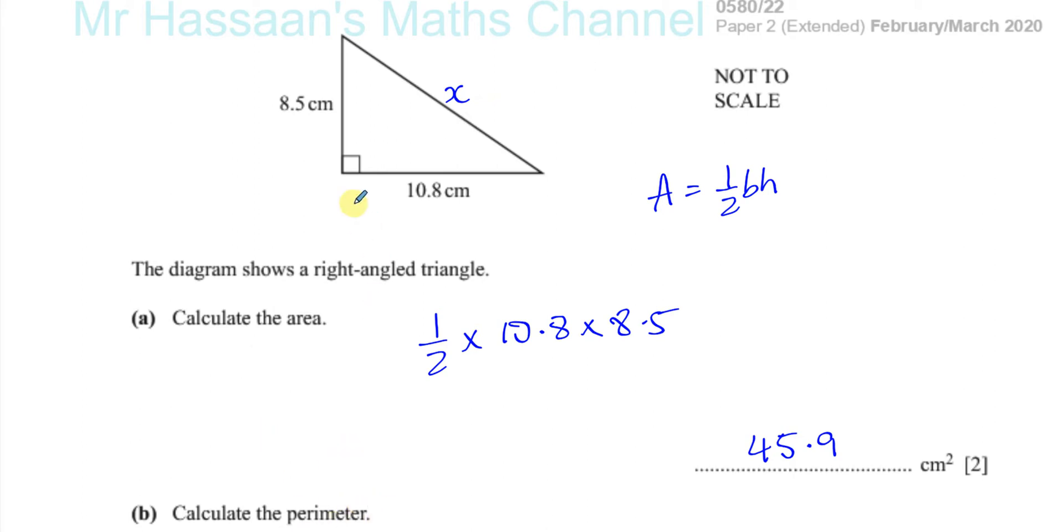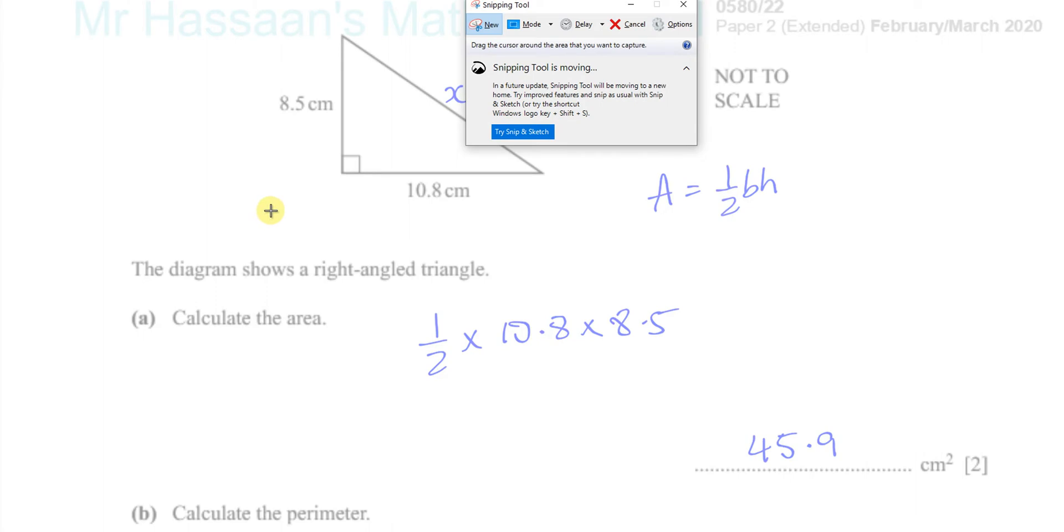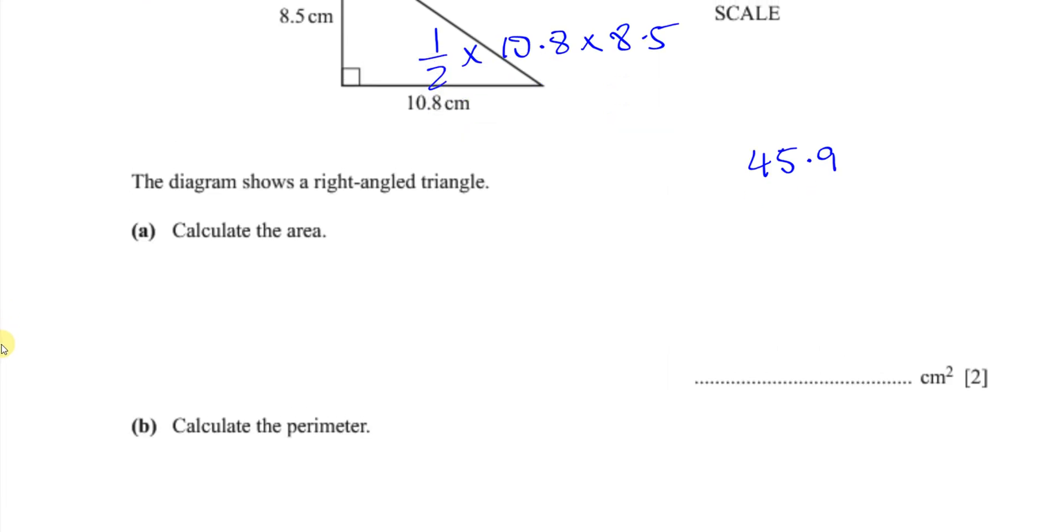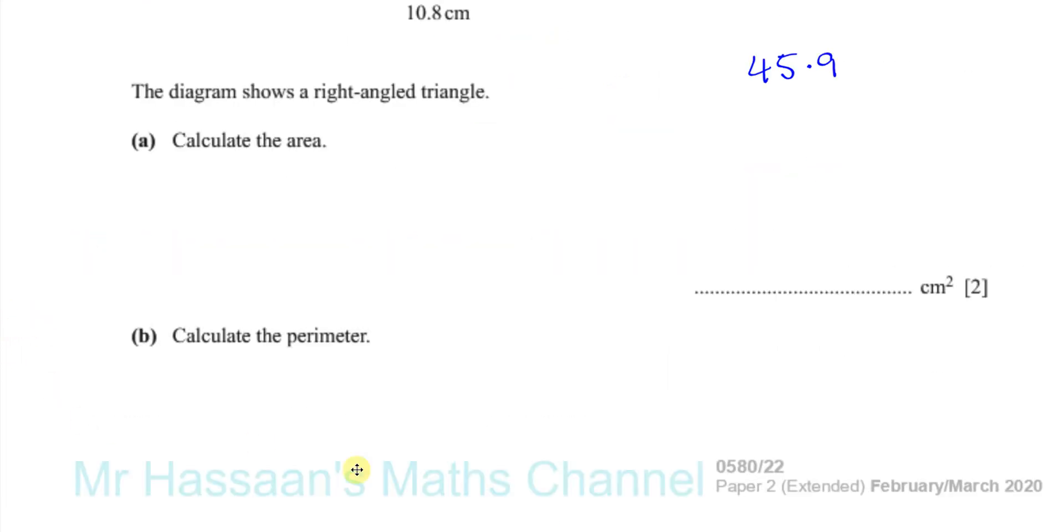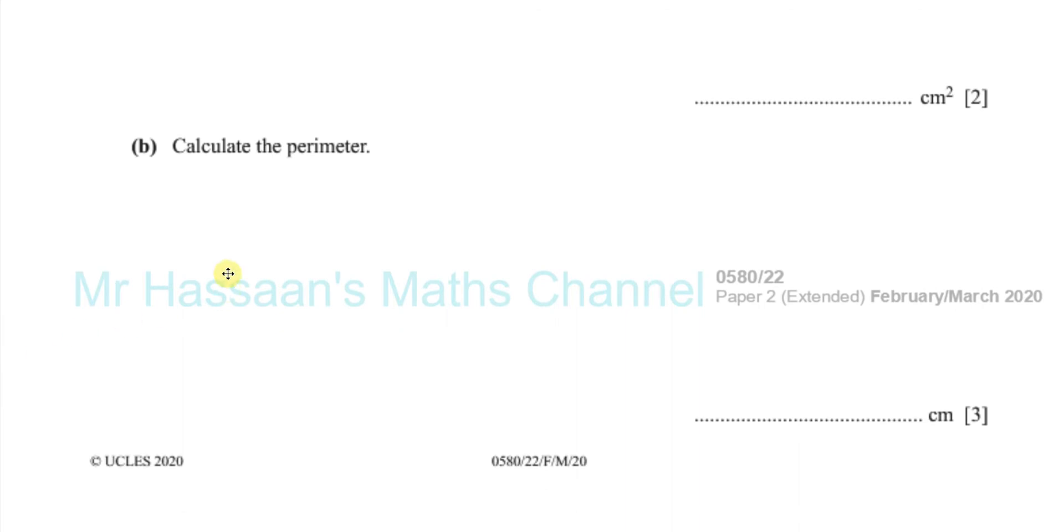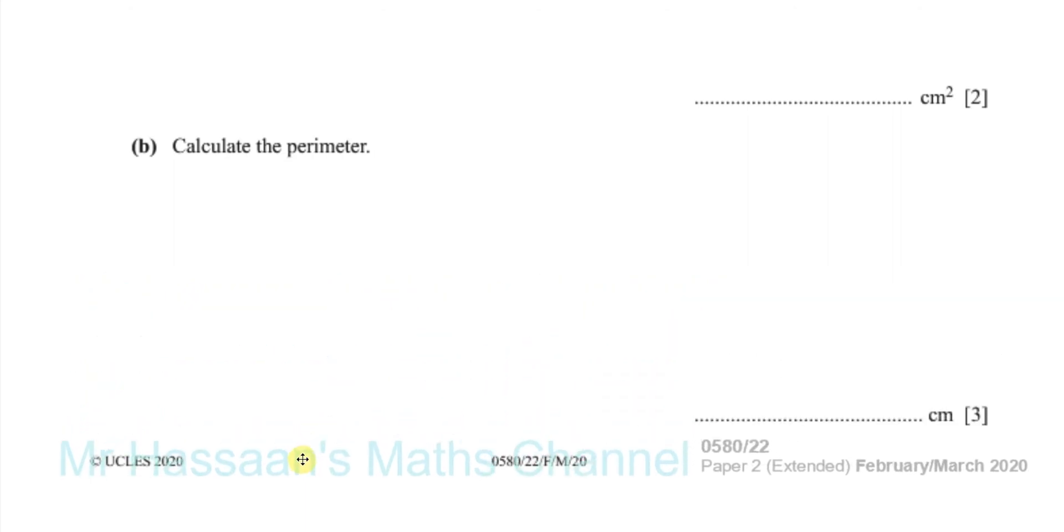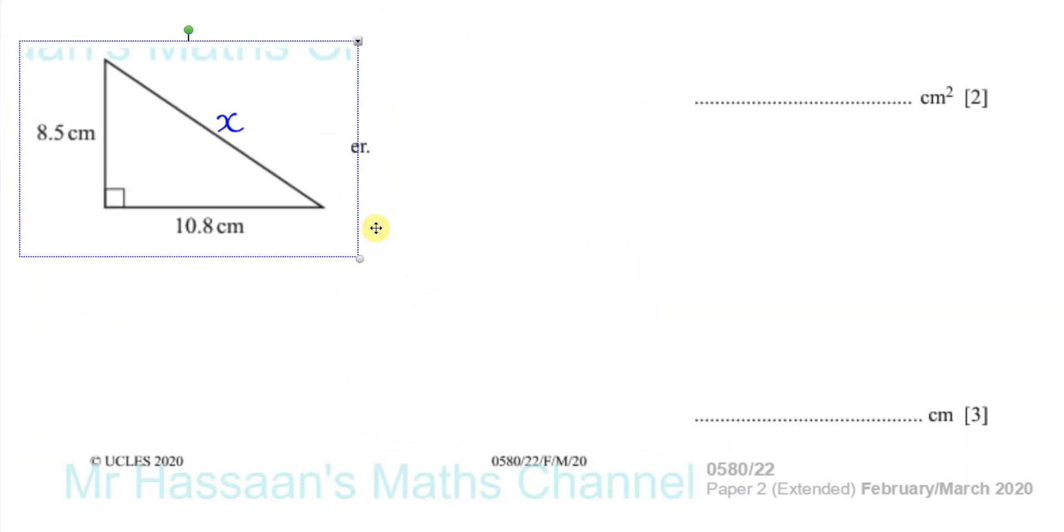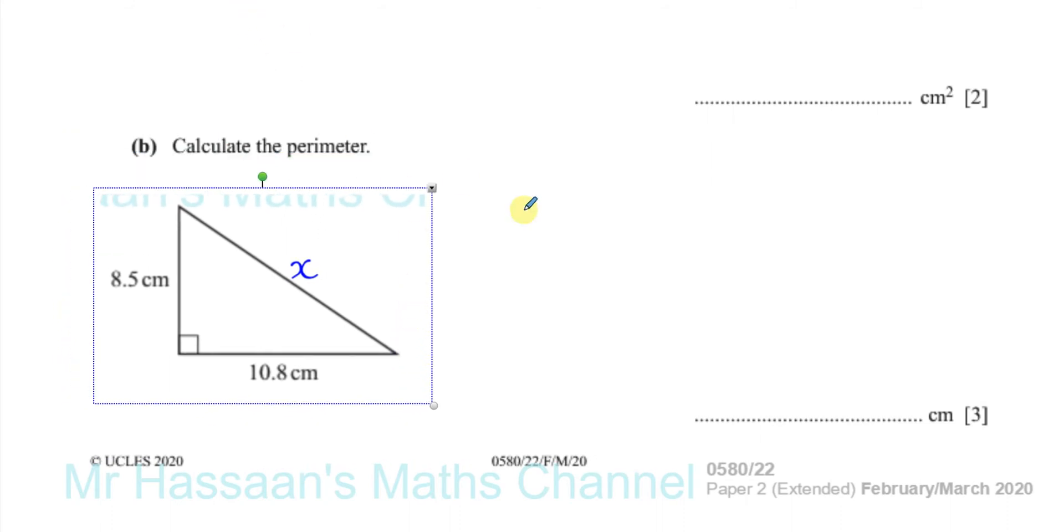What we can do is we can realize that a right-angled triangle is something where the sides have a particular link to each other, which we should know. And it's called Pythagoras' theorem, which states that all the shorter sides and the hypotenuse are linked together by the square of the hypotenuse is equal to the sum of the squares of the two shorter sides. So I know that X squared is equal to 8.5 squared plus 10.8 squared.